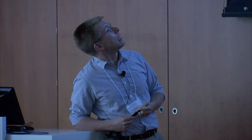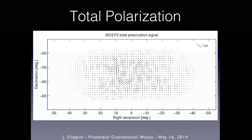Focusing on polarization: this is the total polarization shown as headless vectors on the map. There's a 1.7 microkelvin scale bar — quite small. We've apodized, rolling off the edges where we have poor signal-to-noise and focusing on the middle of the map where our science is. You can see a strong pattern that looks basically like an E-mode — the radial and circumferential patterns I showed you earlier.